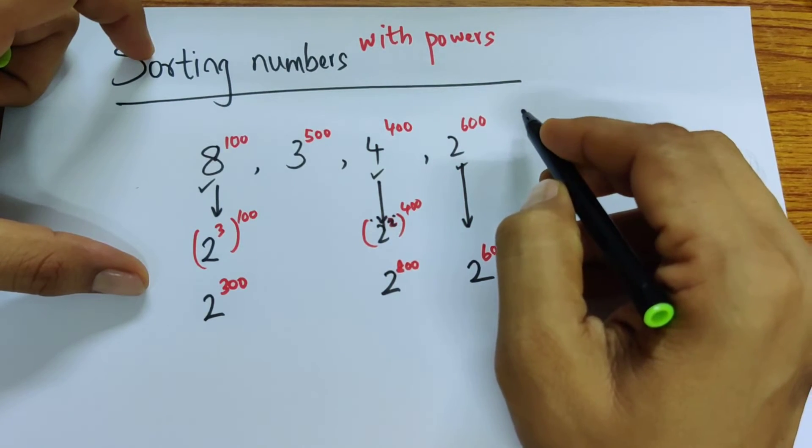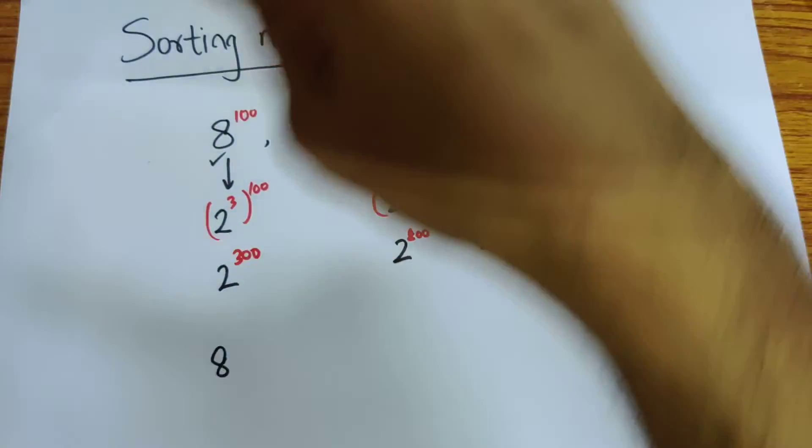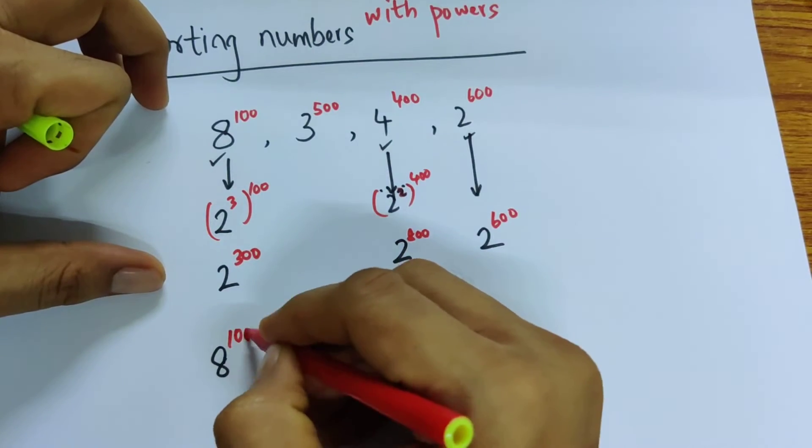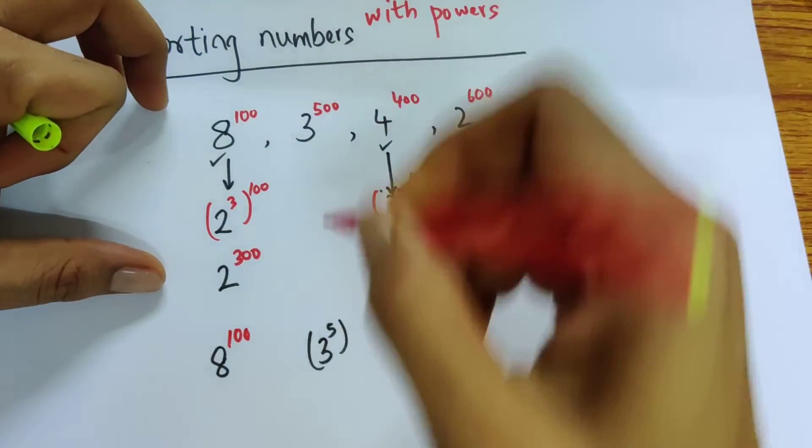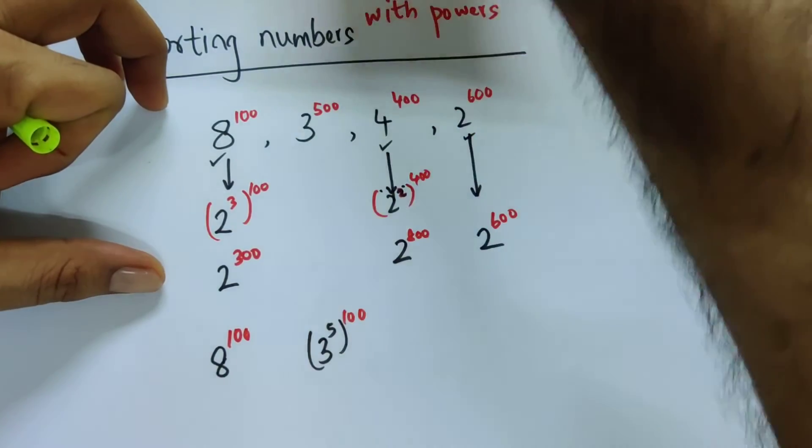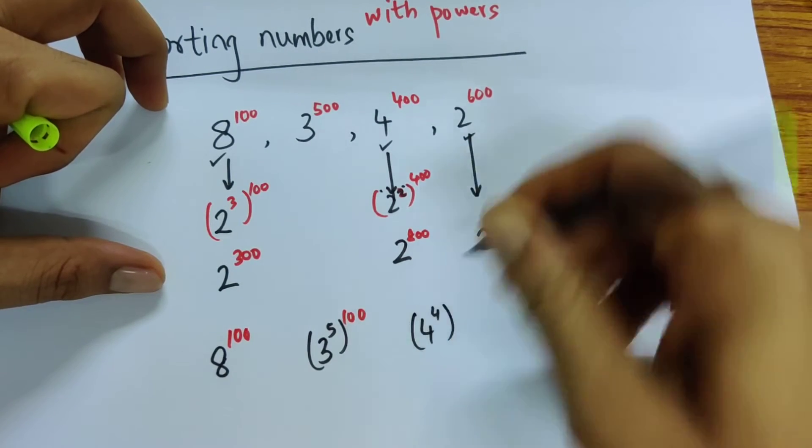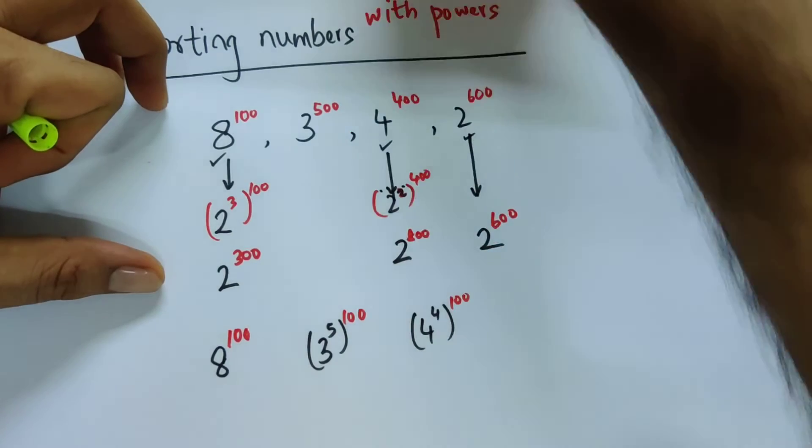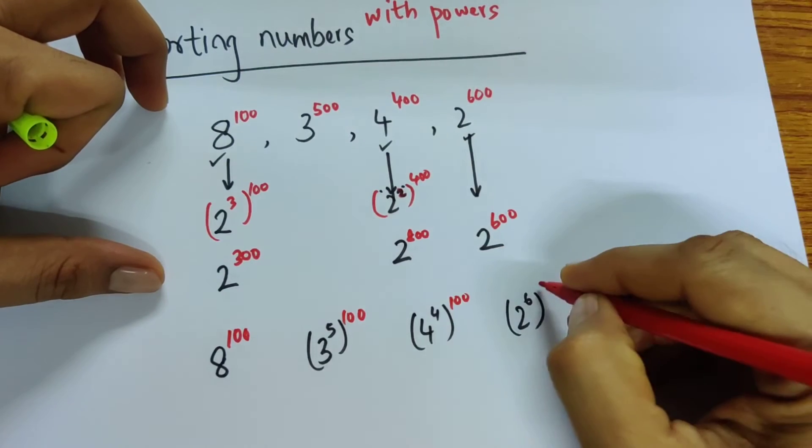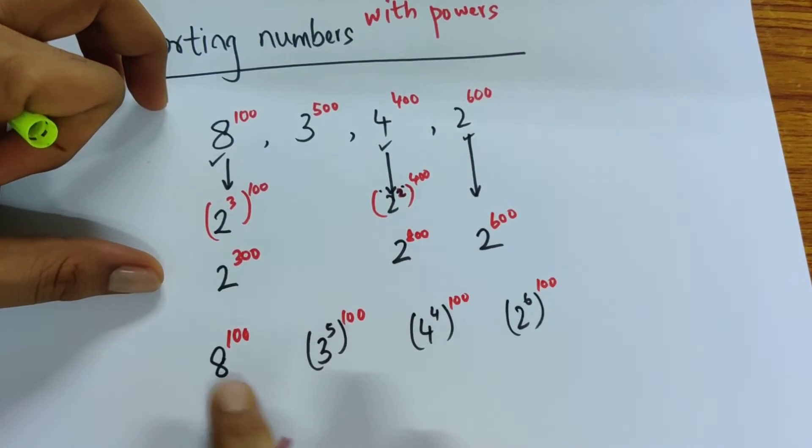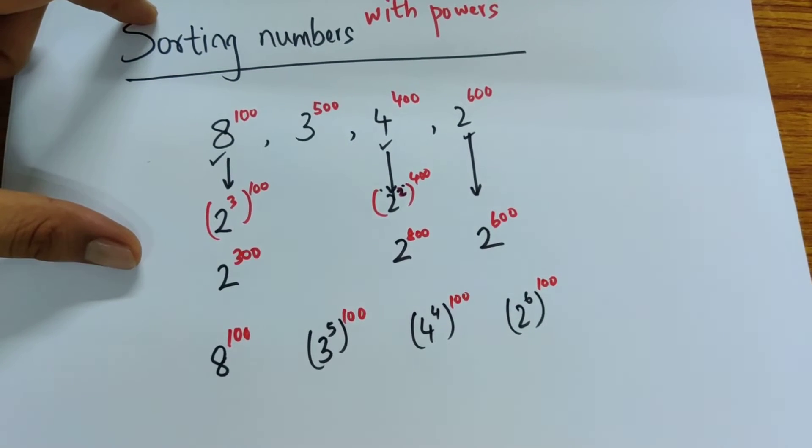We say, how about we compare everything to the power of 100? So I use 8 to the power of 100, then 3 to the power of 5 to the power of 100, then 4 to the power of 4 to the power of 100, and 2 to the power of 6 to the power of 100. Now it's only a question of the numbers inside that will determine how big or small a number is.